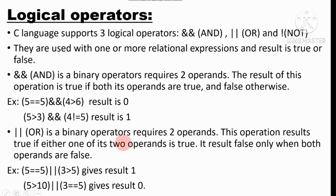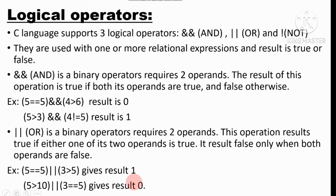OR is also a binary operator because it uses two operands. The OR operation results in true if either one of its two operands is true. It gives false only when both operands are false. For example: one operand is true and (3 > 5) is false — but since one is true, the result is one. But (5 > 10) is false and (3 == 5) is also false — false OR false gives false, so result is zero.